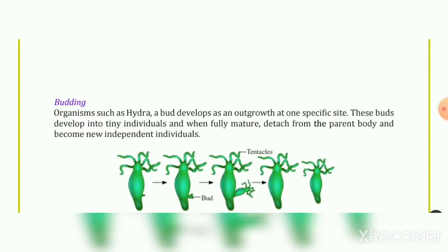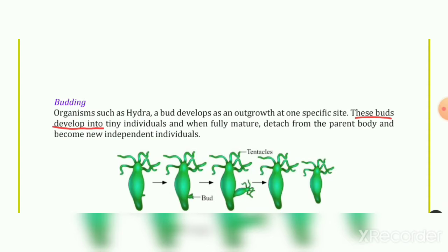The second method is budding. In organisms such as Hydra, a bud develops as an outgrowth at one specific site. This bud develops into a tiny individual, and when fully mature, it detaches from the parent body and becomes a new independent individual.